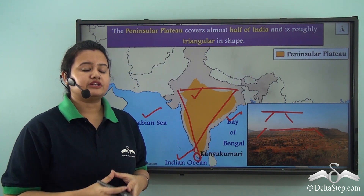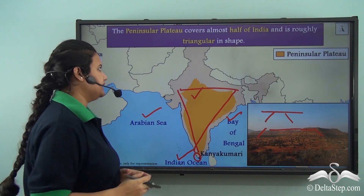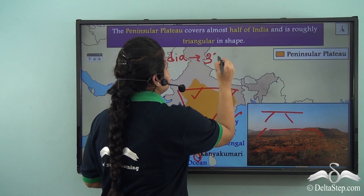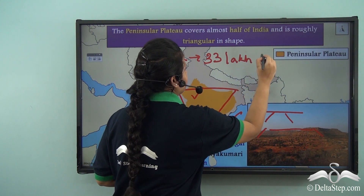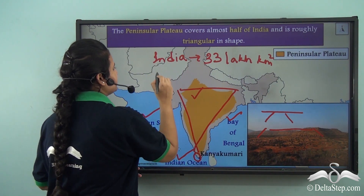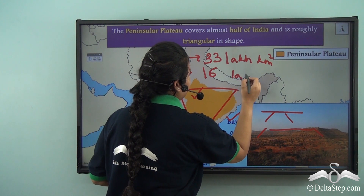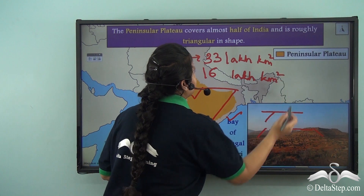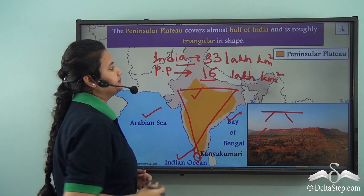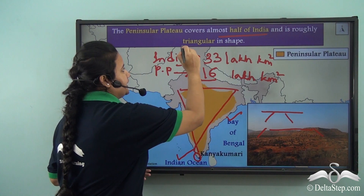The Peninsular Plateau covers a huge area. The total area of India is approximately 33 lakh square kilometers, and the area covered by the Peninsular Plateau is approximately 16 lakh square kilometers. So you can understand that the Peninsular Plateau covers almost half of India, and it is roughly triangular in shape.